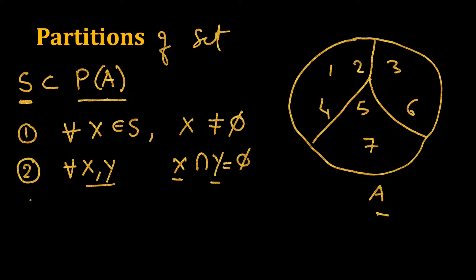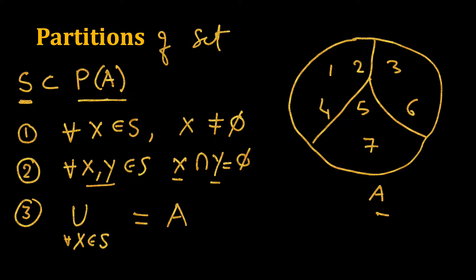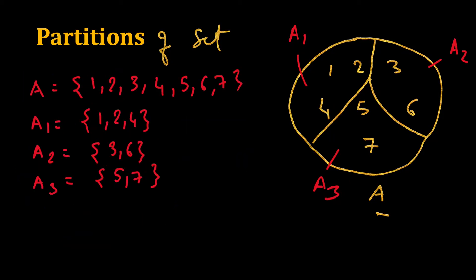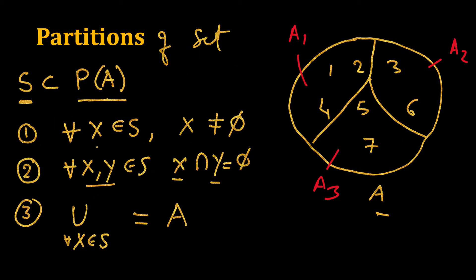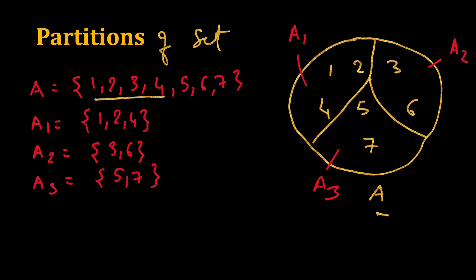The third condition is that the union of all X belonging to S should equal A. Now let's verify all three properties for our example. Let's say the first part is A1, the second is A2, and the third is A3, where A is the complete set. A1 is {1, 2, 4}, A2 is {3, 6}, and A3 is {5, 7}. The first property: all sets in the partition should be non-null — A1, A2, and A3 are all non-null, so the first property is satisfied.